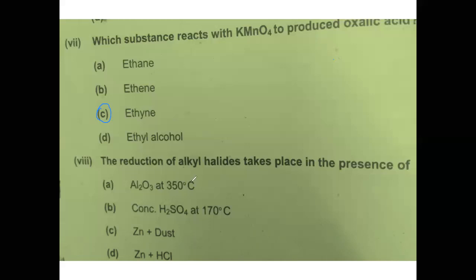MCQ number 8: the reduction of alkyl halide takes place in the presence of zinc and hydrochloric acid, because zinc and hydrochloric acid provide the nascent hydrogen needed for the reduction process.